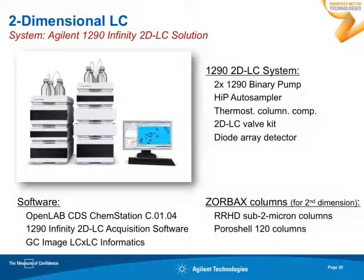The system that allows you to do both comprehensive 2D LC and heart-cutting 2D LC is the 1290 Infinity 2D LC Solution. It's based mainly on a 1290 Infinity system with a second pump for the second dimension, a column compartment with a special valve for injections into the second dimension, and very easy-to-use 2D LC acquisition software that makes it a task of a few minutes to set up 2D LC methods and complex gradient patterns. Gert Vanhoenacker used so-called shifted gradients — where from one injection to the next, the percentage B of the gradient changes — set up in minutes with this software.